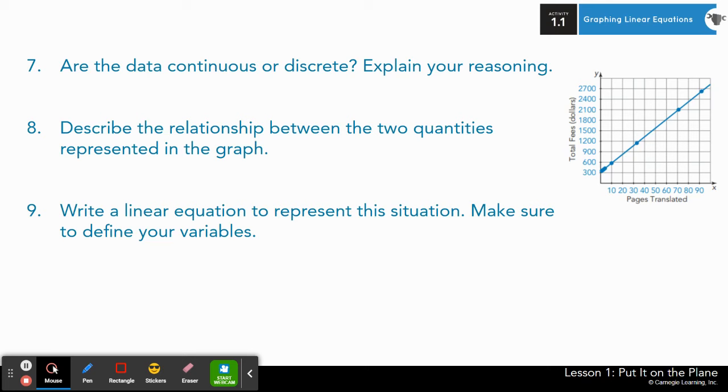Number seven, it says, are the data continuous or discrete? Explain your reasoning. Continuous, if you need a reminder, essentially means does my data fall on any point on this line here? Meaning I can have decimal numbers, halves, quarters, thirds, or does my data only apply to these points plotted? Number eight says, describe the relationship between the two quantities represented in the graph, meaning the relationship between pages translated and the total. And then nine says, write a linear equation to represent the situation. Make sure you define your variables.